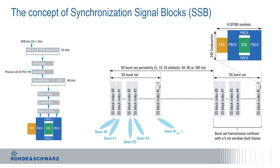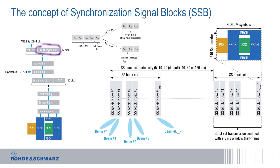For FR2, we need to decode the master information block and look for the so-called PBCH payload bits. These payload bits are used differently depending on the frequency range. For FR2 — the millimeter wave range — we have 3 additional bits on top of the 3 bits obtained from the different DMRS sequences across the three PBCH symbols. That gives us 6 bits in total, which allows us to uniquely identify up to 64 SSB indices in the millimeter wave frequency range.